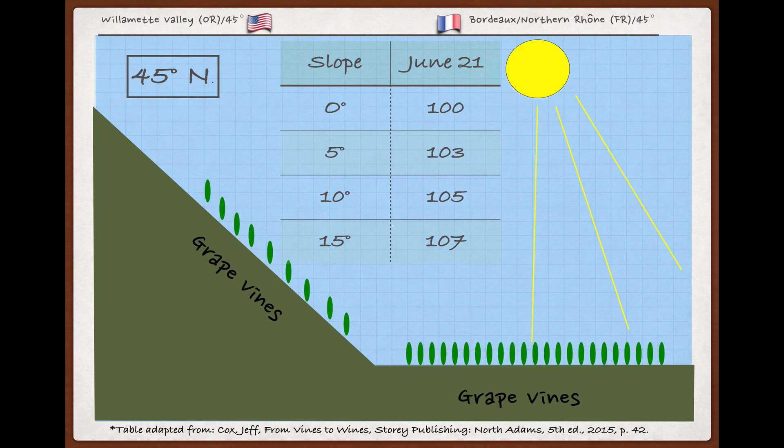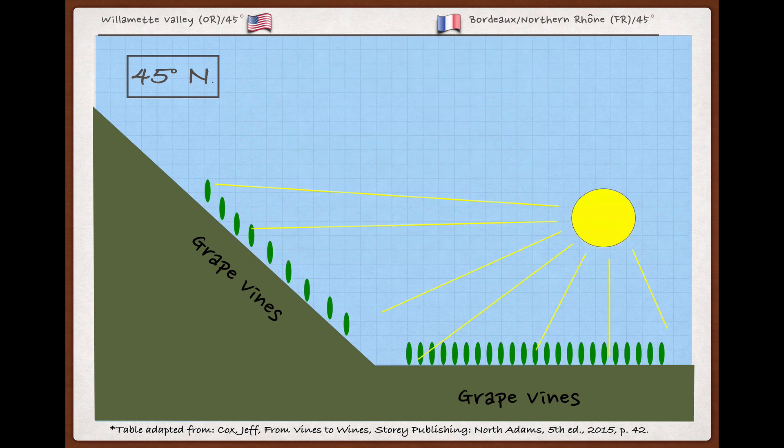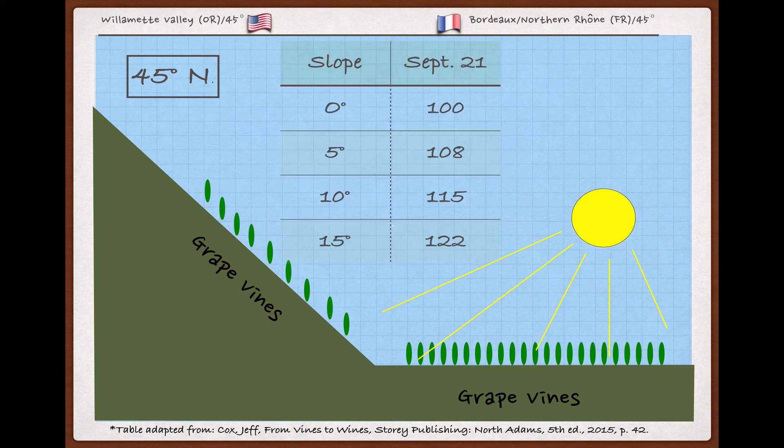But if we stay in the same vineyard, but wait until the sun is lower in the sky, say at the end of summer, then the amount of slope begins to make a much bigger difference in the radiant energy that a site on a hill can get.